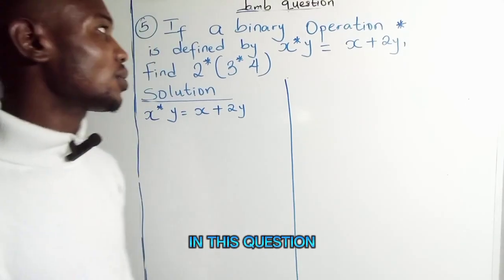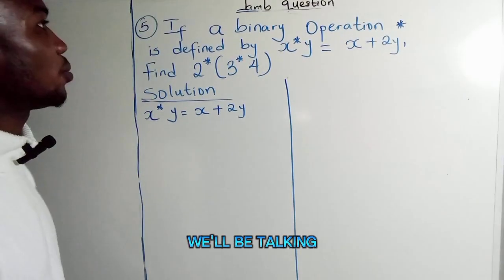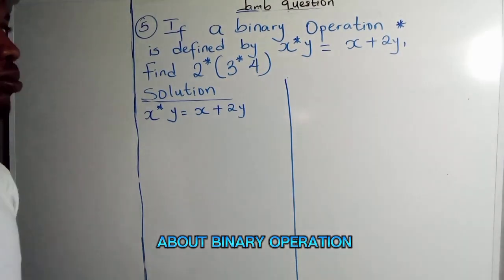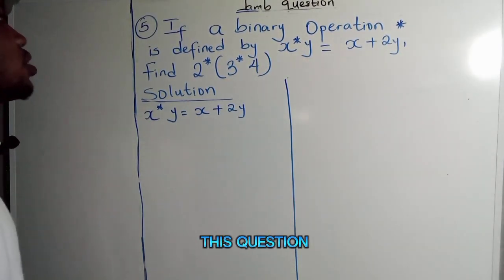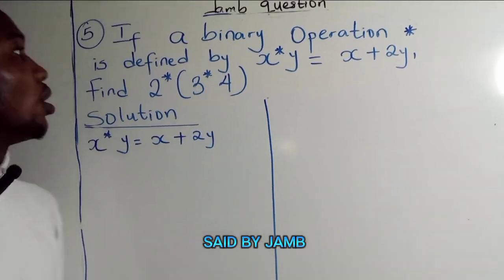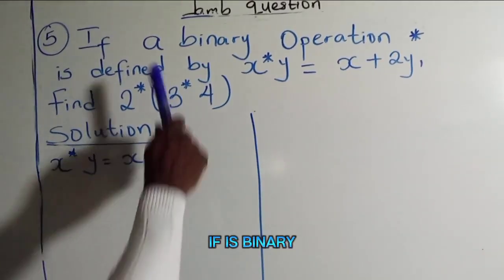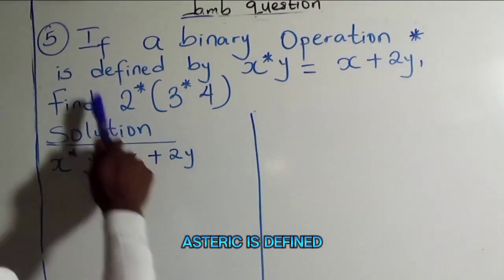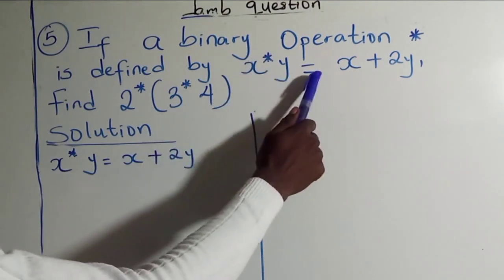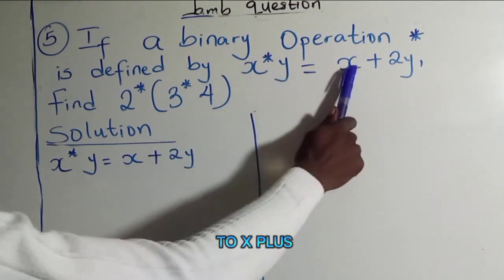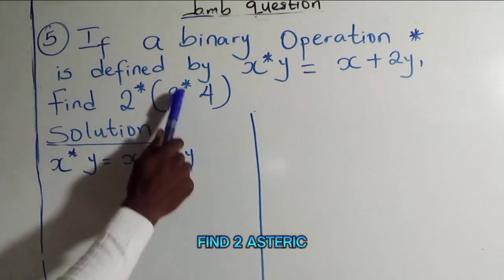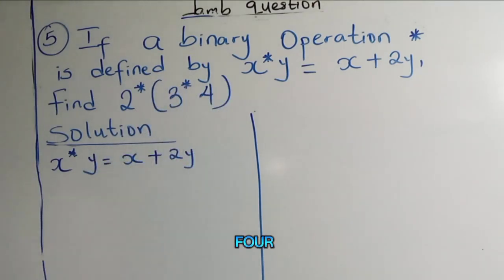Welcome back guys. In this question we'll be talking about binary operations. Let's look at this question which is commonly set. If a binary operation asterisk is defined by x asterisk y which is equal to x plus 2y, find 2 asterisk into 3 asterisk 4.